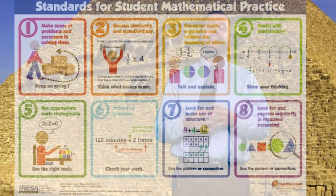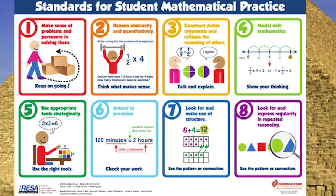One thing that the Common Core does have is the Standards for Mathematical Practice. These standards describe what should be occurring within the classroom, such as having students do problem solving, having students do reasoning, having students understand what they are doing through modeling, and having precision in what they do — as well as being able to apply the mathematics. So these Standards for Mathematical Practice really show what occurs within the classroom.